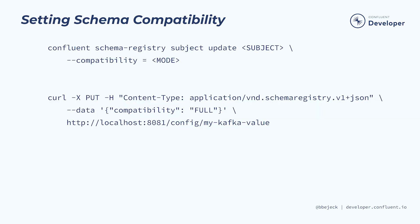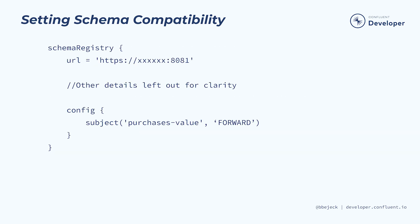Now that we've covered the different compatibility levels, let's have a quick look at how you would set the level for a schema subject. It's important to note that you can set compatibility at the subject level, so it's possible to have schemas with different compatibility levels. Here's how you can set the compatibility level with the Confluent CLI — note that we've left off the security configs for clarity. The second example uses the Schema Registry REST command, and this final example sets the schema compatibility using the Gradle plugin.